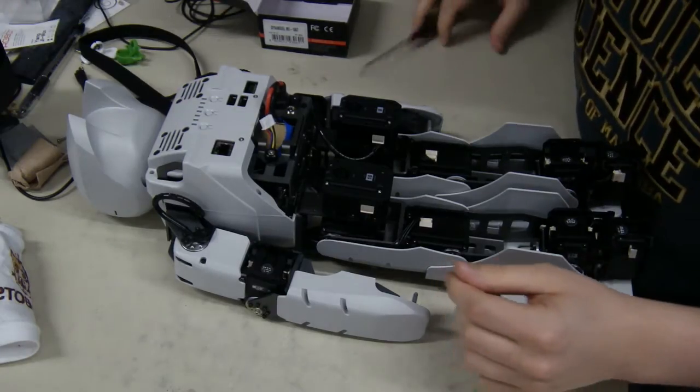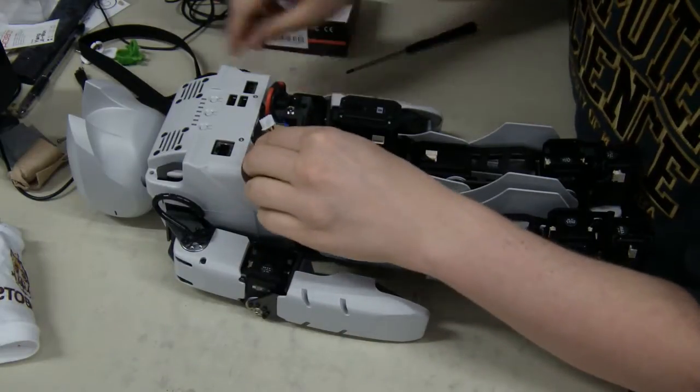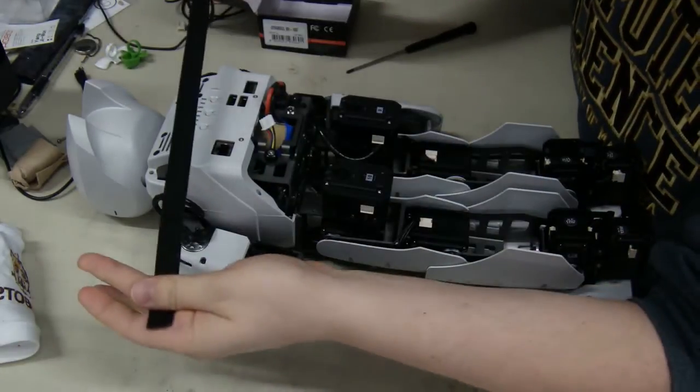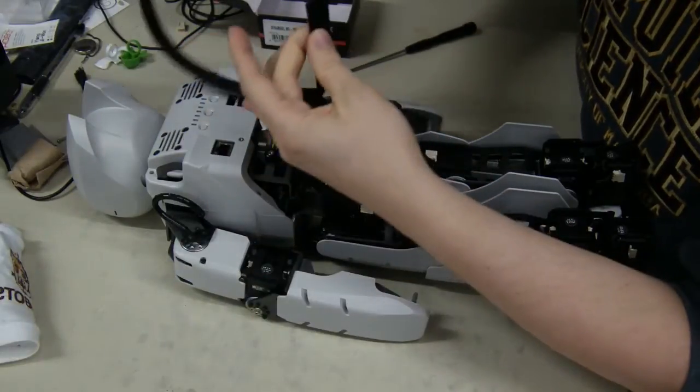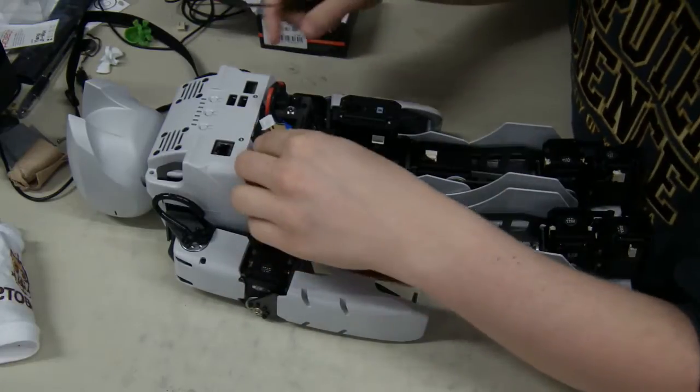Alright, so we are going to open up the Darwin's torso and take a look at some of what's inside. We've already removed the nylon handle strap. It's just a simple little slide-through thing like that. I can't actually see the camera, so hopefully that was in frame.